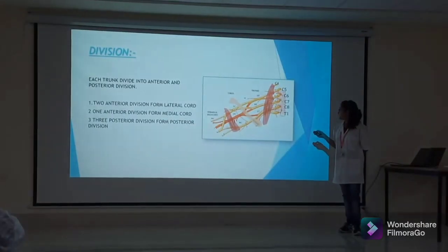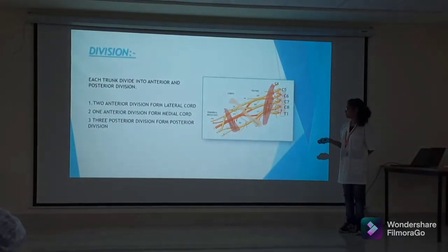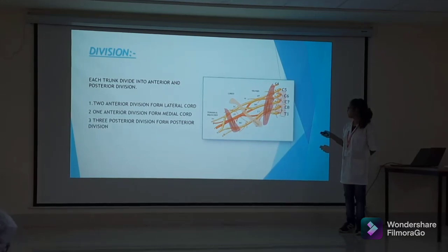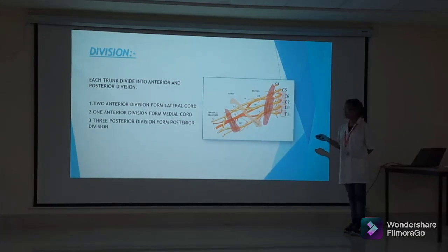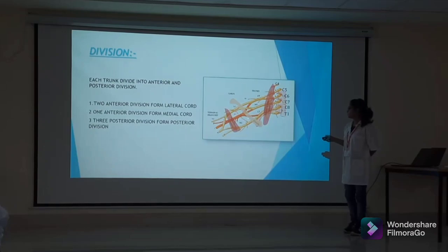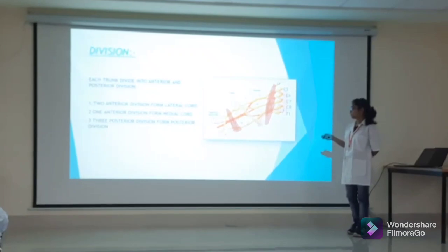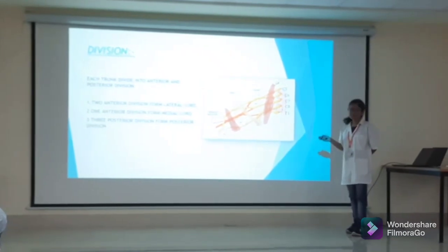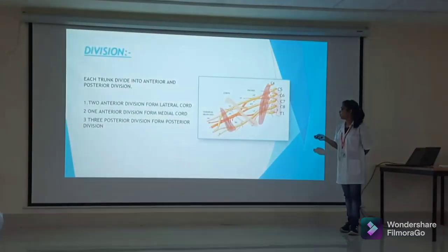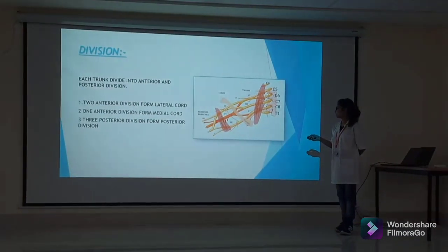Each trunk divides into anterior and posterior divisions. The two anterior divisions from the upper trunk and middle trunk form the lateral cord. One anterior division from the lower trunk forms the medial cord, and all three posterior divisions form the posterior cord.